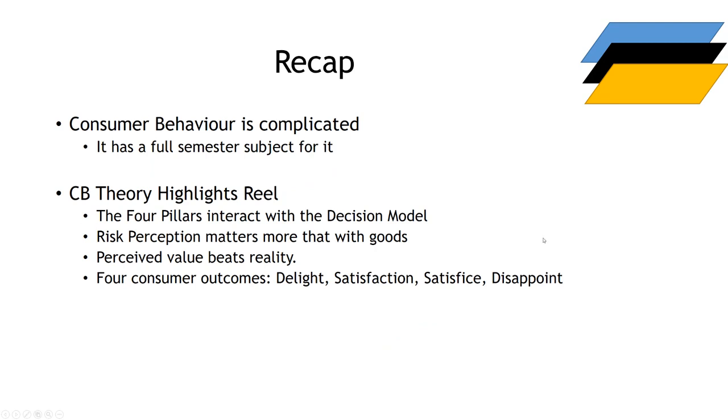Quick recap: Consumer behavior is complicated. There's a full semester subject for it. But the keys are, think about the interaction effects now. The IHIP model interacts with other things. What impact do you have from those elements we've been picking up? How does consumer behavior theory influence or inform the servuction model? What's happening in terms of, if there are four customer outcomes—delight, satisfaction, satisficing, and disappoint—where does that fit in terms of what you want to do? If you're going to engage in a value offering, examining a value offering, where do you want to position it? Do you want to be adequacy? Do you want to be satisfied? Do you want to be mid-card? Because mid-card is respectable. Not everyone gets to be world champion.